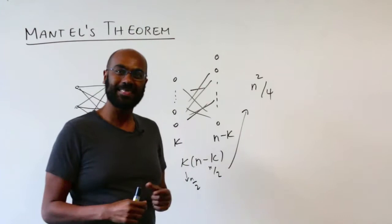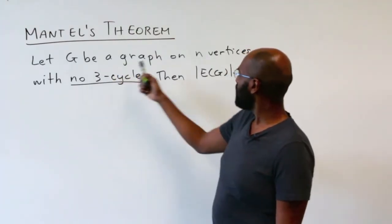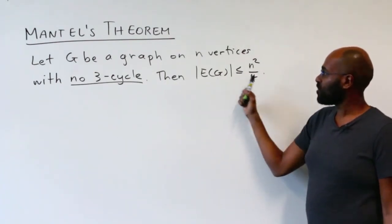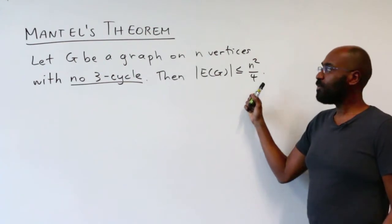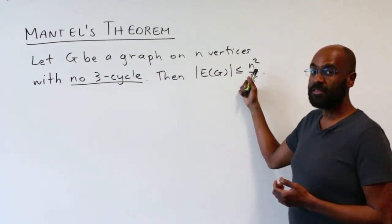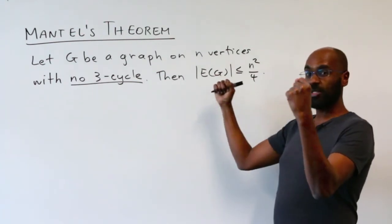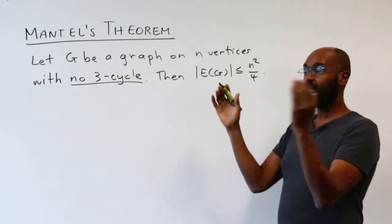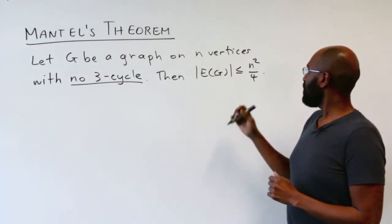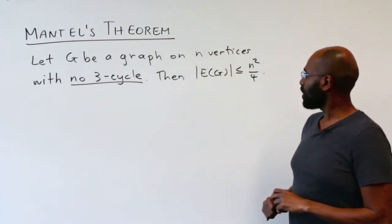Mantel's theorem states: if you have a graph G on n vertices and it has no three-cycle in it, then an upper bound on the number of edges is n squared over four. We know how to roughly achieve this upper bound. If n is even, we can create a bipartite graph with n over two vertices in each part, and the number of edges between them would be exactly n squared over four. If n is odd, we'd have something close to n over two on each side.